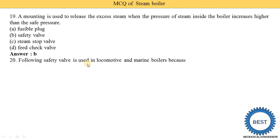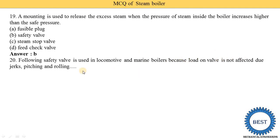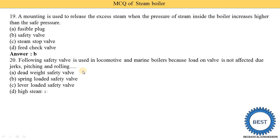Which safety valve is used in locomotive and marine boilers because the load on the valve is not affected by jerks, pitching, and rolling? Options are dead weight safety valve, spring loaded safety valve, lever loaded safety valve, and high steam and low water safety valve. Option B — spring loaded safety valve — is correct for locomotive and marine boilers.